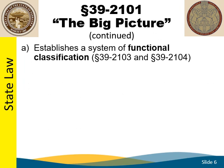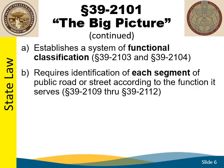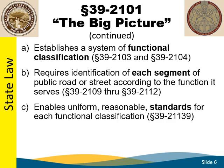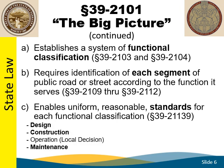Fundamental to the development of an integrated system of public roads is a determination of the function that each road segment serves. Through adoption by law of a functional classification system, it is the intent of the legislature that each segment of public road be identified according to the function it serves. Identifying functional classifications permits the establishment of uniform standards for design, construction, and maintenance. Standards must be adequate to meet the needs of an increasingly mobile society. For more information on these topics, see the classification and standards videos.